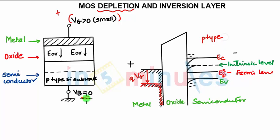In this case, since the substrate bias is 0, the oxide field will be directed downwards, positive towards the ground.